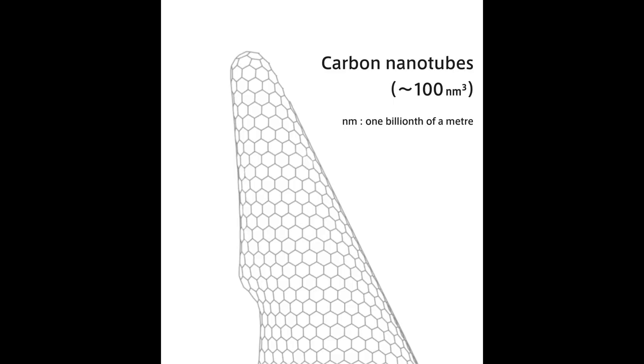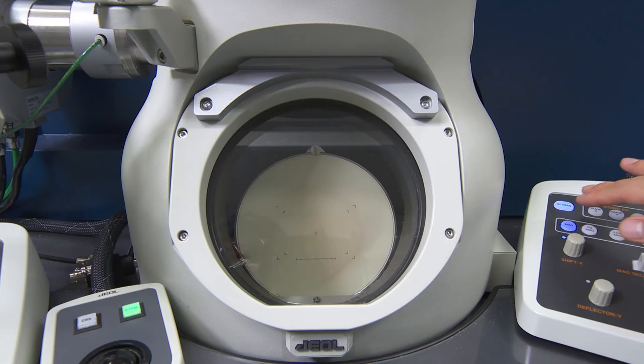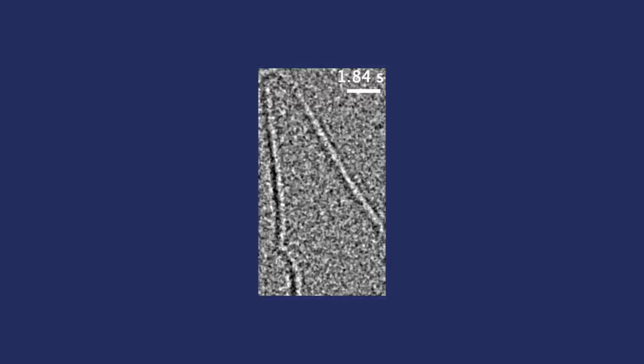First, a carbon nanotube is used as a tiny container to prevent the molecules from escaping. Then, a saline solution is poured into the nanotube. The water is then removed using a vacuum, which we can observe using this electron microscope.